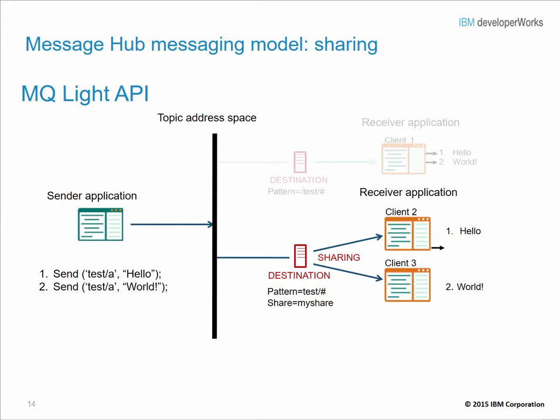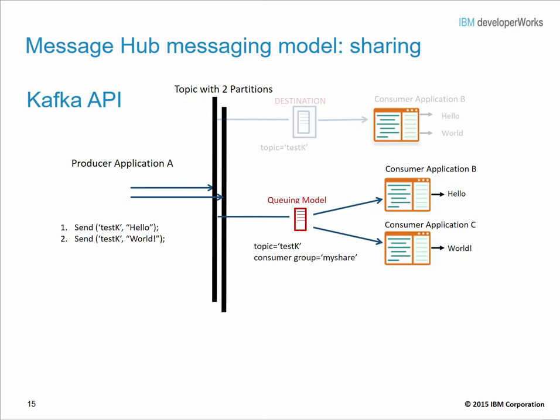The next model is shearing. In the MQ-Lite API, multiple clients consume messages from the same place, but each message is only delivered to a single client. For example, with two messages — 'hello' and 'world' — and two clients, one client gets 'hello' and the other gets 'world'. To implement shearing, both clients must indicate the same share name in their API calls. In the Kafka API, the sharing model is implemented similarly by having each consumer application indicate the same consumer group name in the API call used to receive messages.